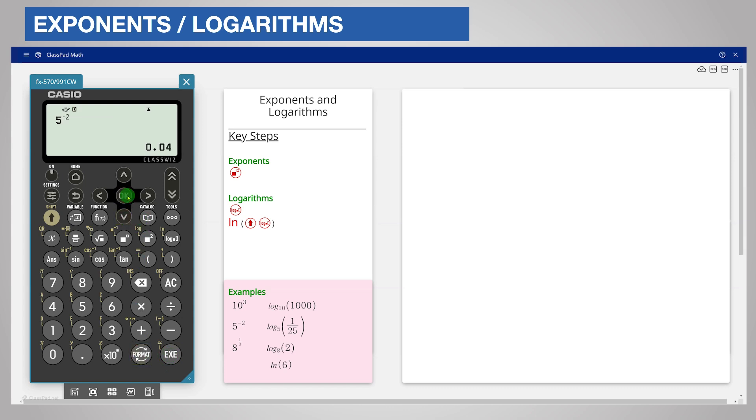You can enter indices in fraction form. To evaluate 8 to the power of 1/3rd, enter 8, press the exponent key, now enter a fraction and your fraction 1/3rd. Again, press the Execute key. 8 to the power of 1/3rd is 2.